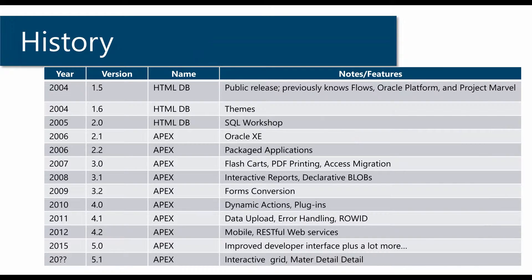A little bit of history about Apex. You can see that the first public release was in 2004, and very consistently it's been updated almost every year — at least it was updated pretty much every year, all the way up to 2012.